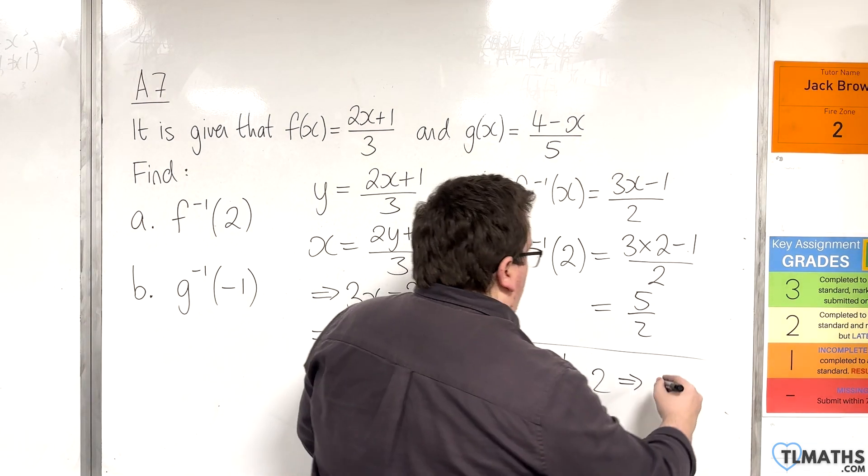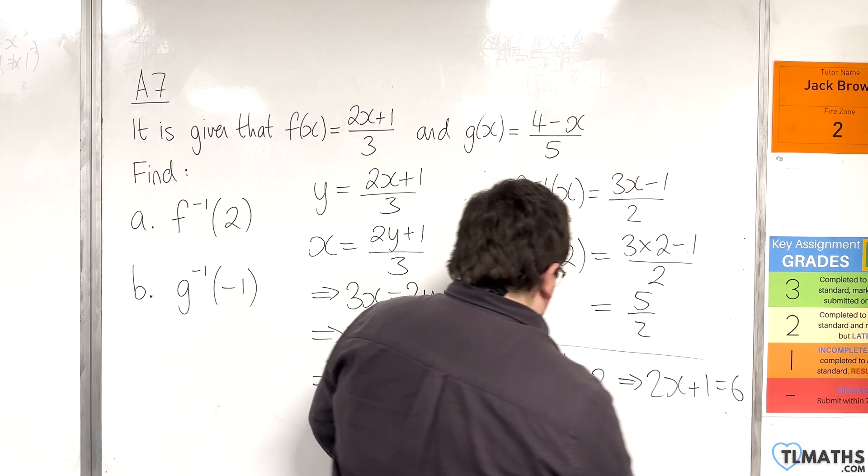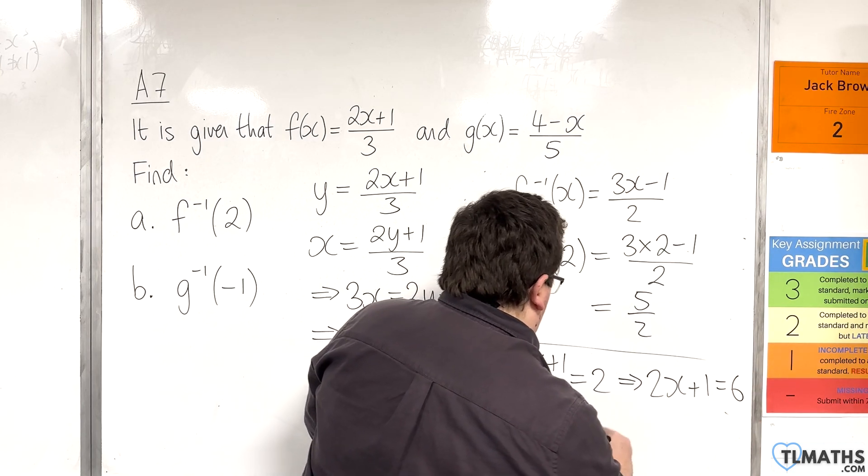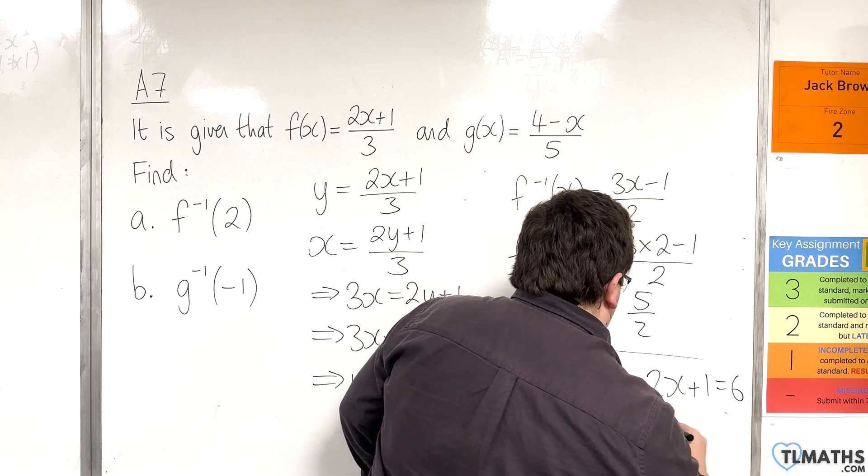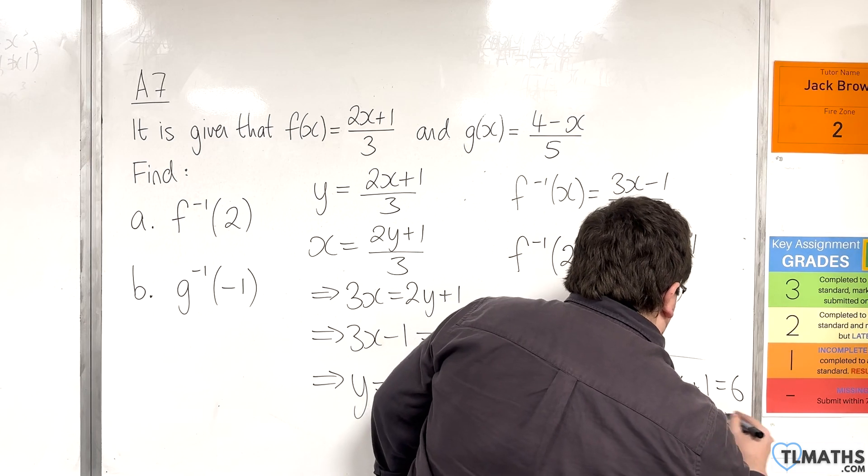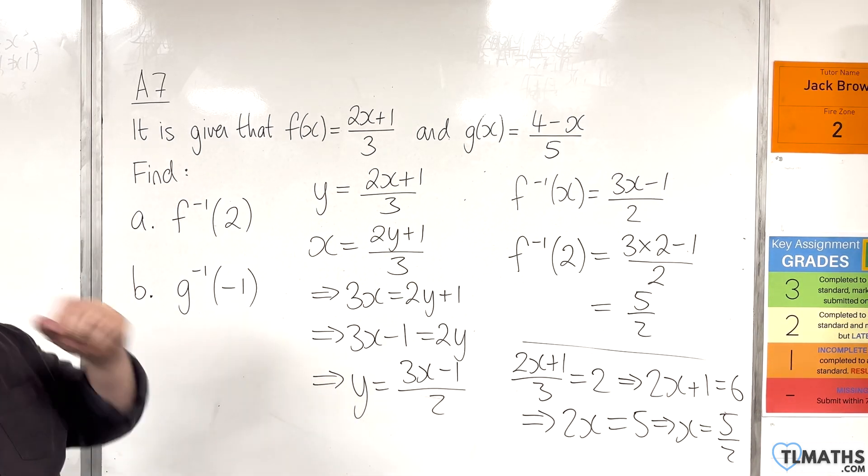So, multiply up by the 3, subtract 1 from both sides, and then divide both sides by 2. And, you get the 5 halves that way instead.